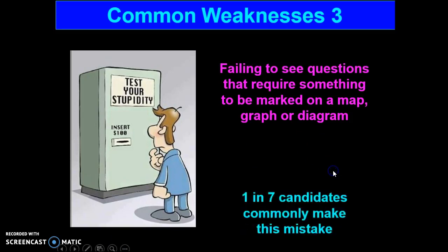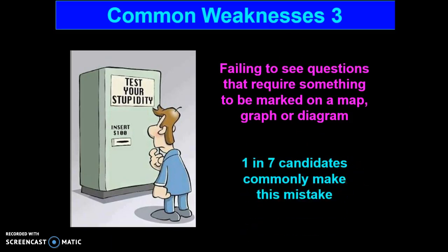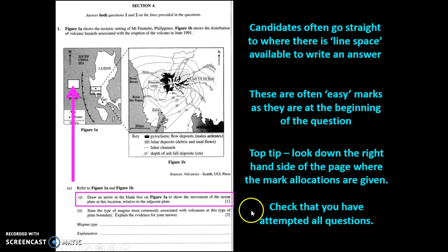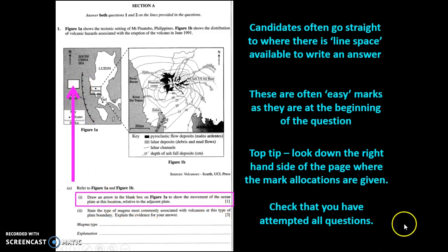Another very common weakness — in fact, one in seven candidates make this mistake — is failing to see questions that require something to be marked on a map, a graph, or a diagram. These questions are so common and so commonly missed. The top tip is to look down the right-hand side of the page where the mark allocation is given. There will be a mark here, but no white space underneath it. Candidates often rush in and go straight to where there are lines to write on, and they miss the question above. These are often easy marks — maybe only one or two — but they could be the difference between an A and a B. So make sure you don't miss them. Here's the map that was asking you to draw the movement of the ocean plate in a given area.